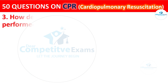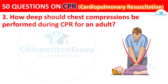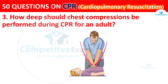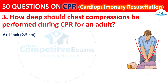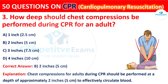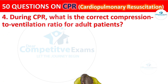Question 3: How deep should chest compressions be performed during CPR for an adult? Your options are: 1 inch (2.5 cm), 2 inches (5 cm), 3 inches (7.5 cm), or 4 inches (10 cm). The correct answer is B: 2 inches (5 cm). Chest compressions for adults during CPR should be performed at a depth of approximately 2 inches (5 cm) to effectively circulate the blood.